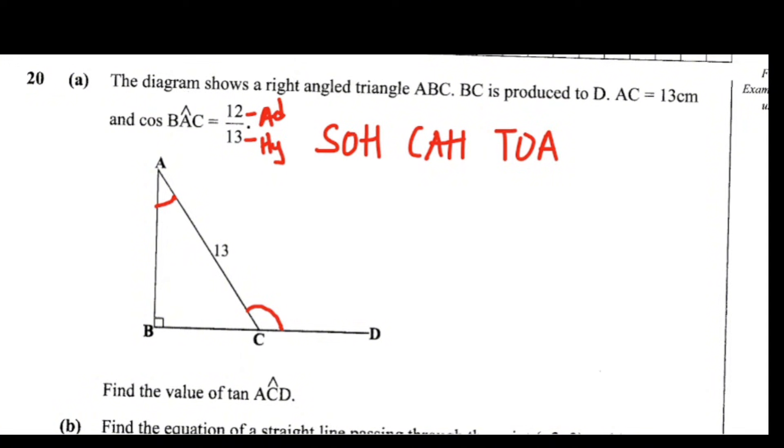So you can even confirm on this right angle triangle, line AC which is the hypotenuse is already 13. So if we are dealing with cos right here, it means this BC would be our opposite, and AB would be our adjacent. So here on the adjacent, this is where we have 12 centimeter there.